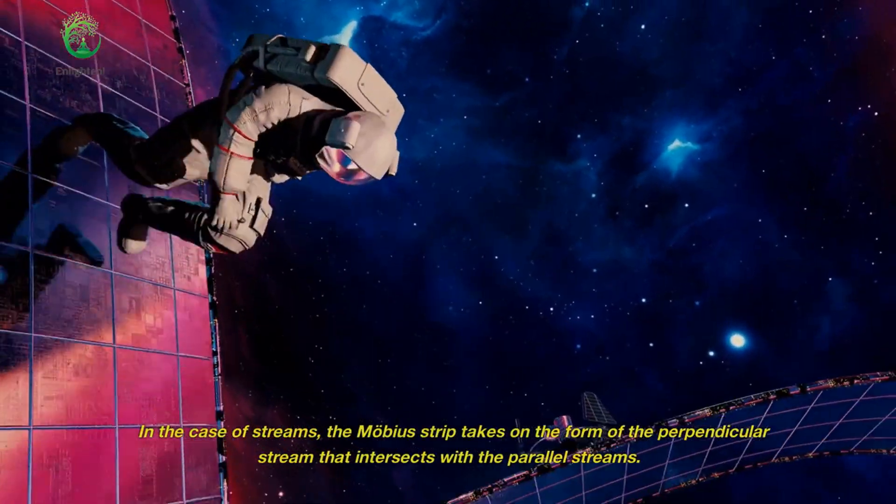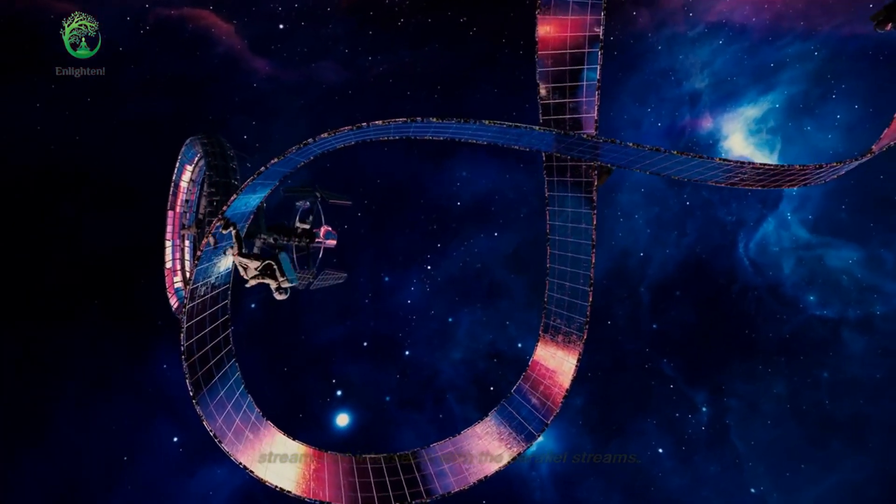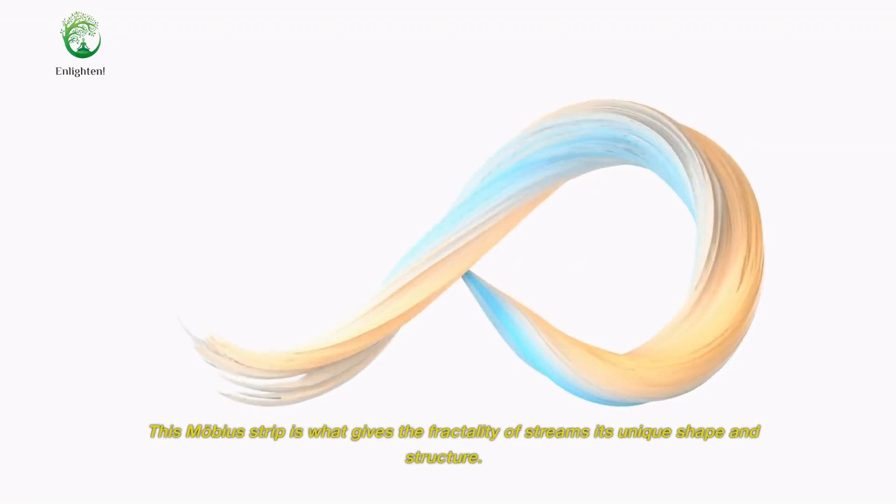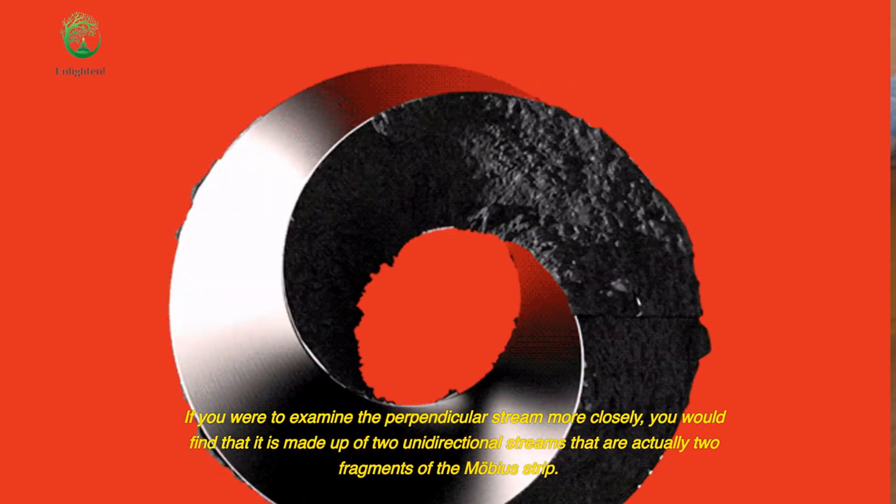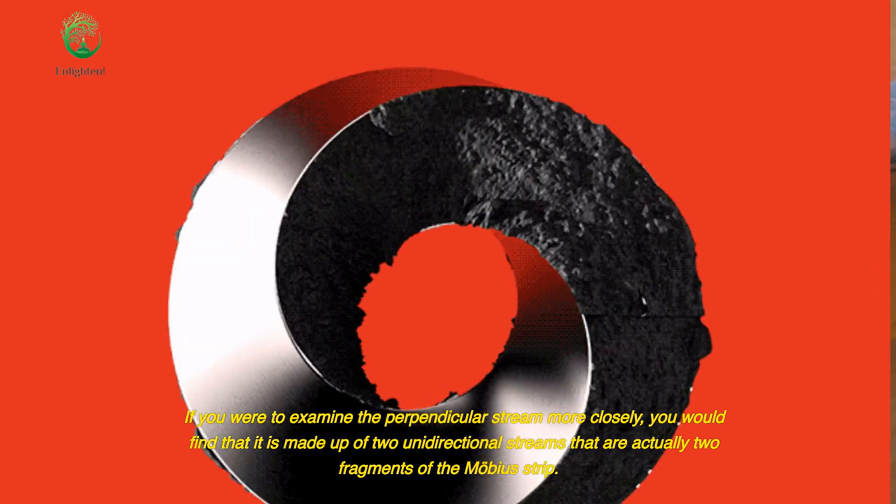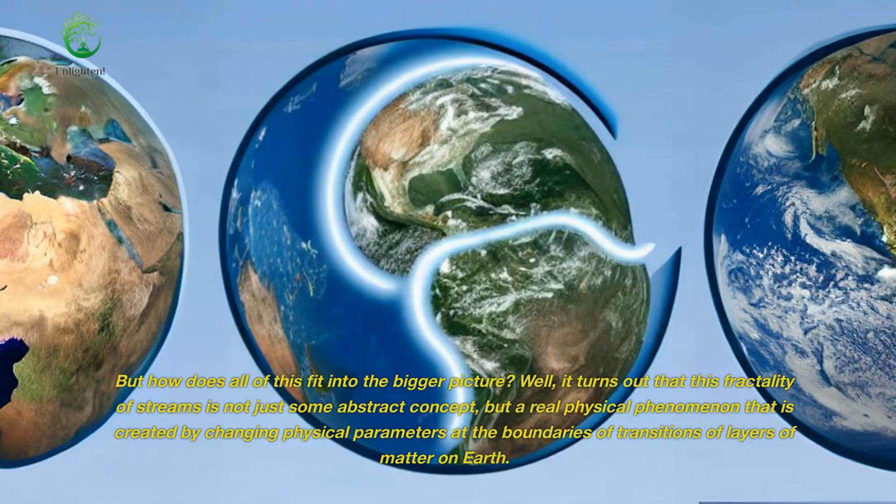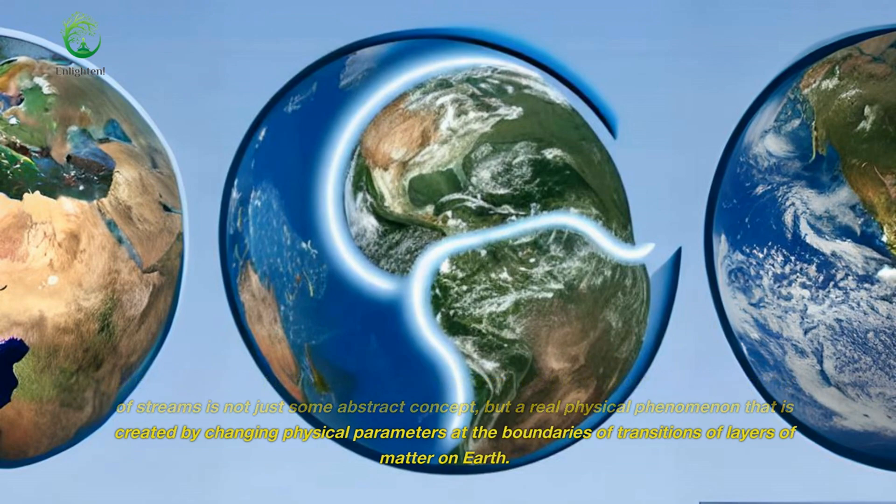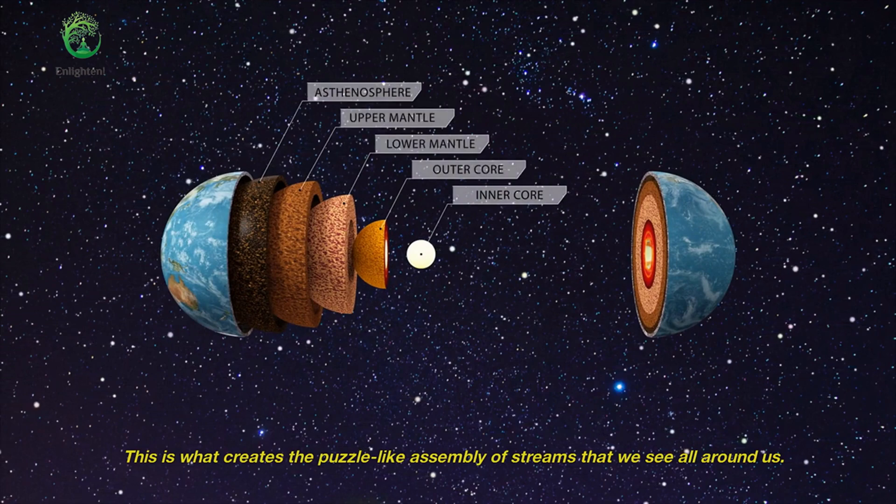In the case of streams, the Mobius strip takes on the form of the perpendicular stream that intersects with the parallel streams. This Mobius strip is what gives the fractality of streams its unique shape and structure. If you were to examine the perpendicular stream more closely, you would find that it is made up of two unidirectional streams that are actually two fragments of the Mobius strip. But how does all of this fit into the bigger picture? It turns out that this fractality of streams is not just some abstract concept, but a real physical phenomenon that is created by changing physical parameters at the boundaries of transitions of layers of matter on Earth. This is what creates the puzzle-like assembly of streams that we see all around us.